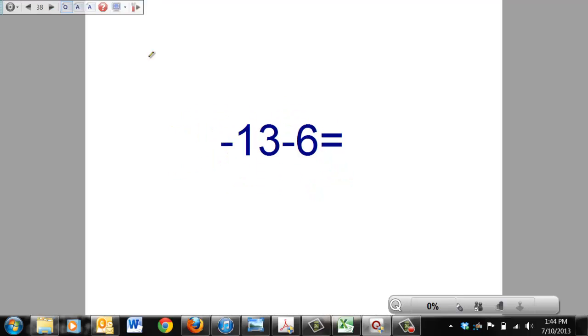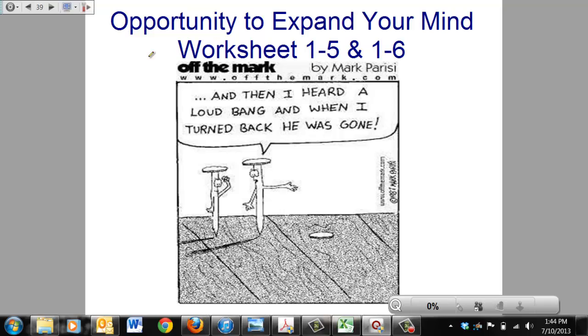And here we go. Negative 13 minus 6. Pause it and work on that one. Alright, this one was not an ugly problem. So we did not do step 1. We did not multiply the signs. We go straight to step 2. Signs are the same, so we're going to find the sum. The sum of 13 and 6 is 19. Sign in front of your largest number. Largest number is 13. It's negative. Negative 19 is our answer. Easy math. Your opportunity to expand your mind tonight. Worksheet 1516. Get hot.